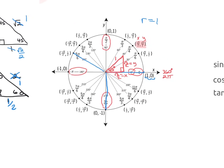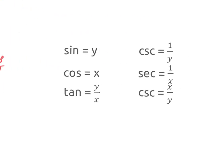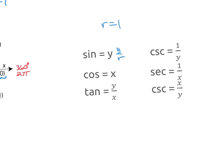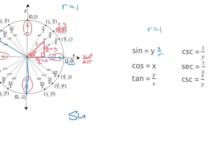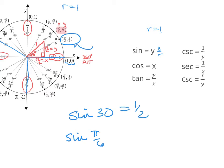Now over here, this is a simplified version of what you've already memorized. Remember, sine was always y over r, but now our r value is 1. So really I don't need to show y divided by 1 — sine is just y. For example, if I wanted to find the sine of 30 degrees, or in radians, the sine of pi over 6, all I have to do is come over here, look at my ordered pair — sine is the y of the ordered pair — so my answer is 1 half.